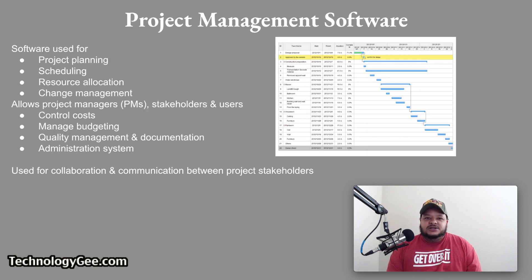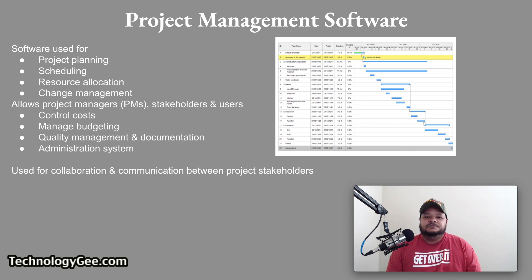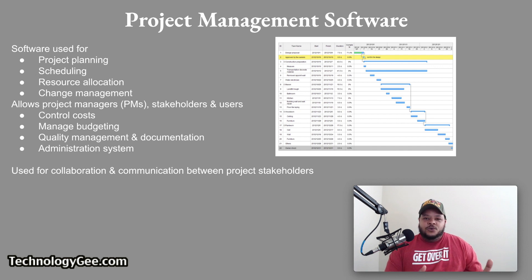Project management software is software used for project planning, scheduling, resource allocation, and change management. It allows project managers (PMs), stakeholders, and users to control costs, manage budgeting, quality management, and documentation, and may also be used as an administration tool. Project management software is also used for collaboration and communication between project stakeholders. A Gantt chart is a common output — it allows you to set deadlines and milestones along the way until you reach your end objective for completing a task or goal.